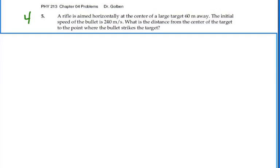Take a look at problem 4-5. The rifle is aimed horizontally at the center of a large target 60 meters away. The initial speed of the bullet is 240 meters per second. What is the distance from the center of the target to the point where the bullet strikes the target?